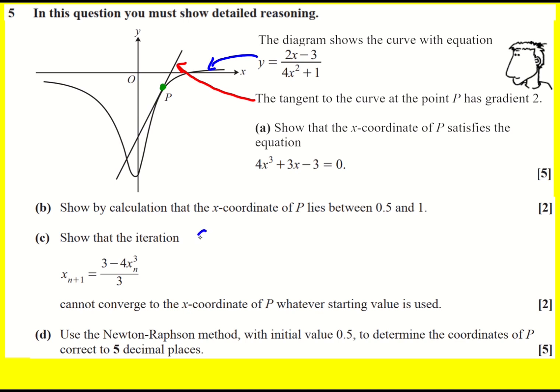So we need to remember that the gradient of the curve is equal to the gradient of the tangent at the point where they touch. So we need to find the gradient function, dy by dx. This is going to involve the quotient rule because we have a fraction. u dash v minus u v dash over v squared.